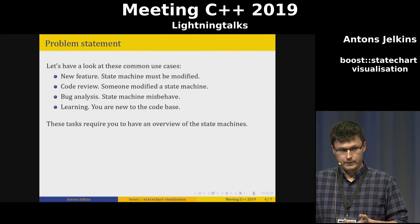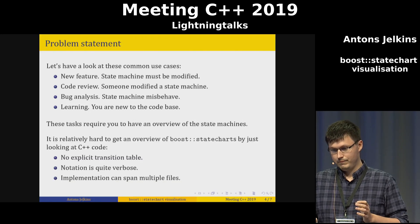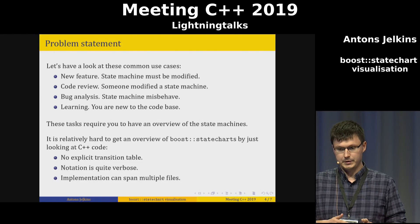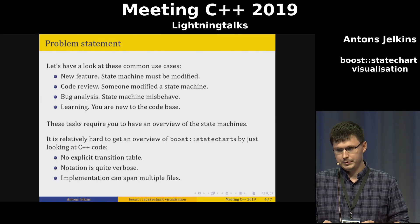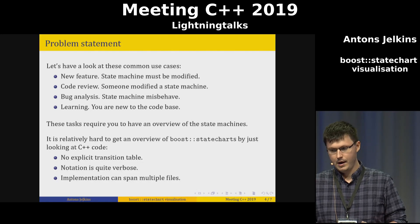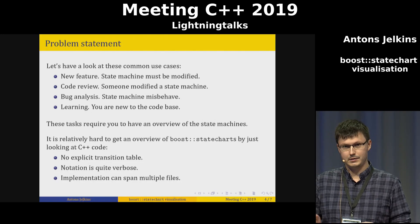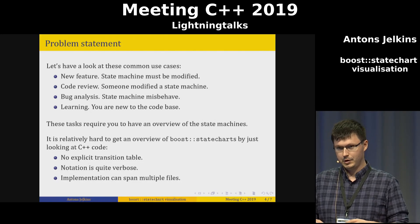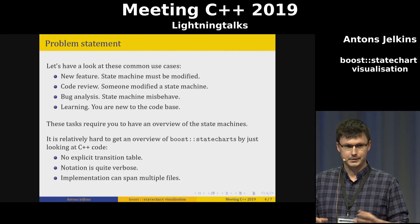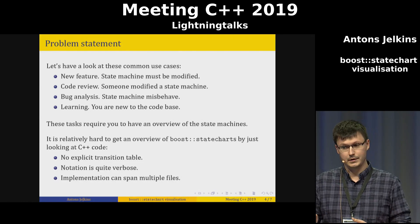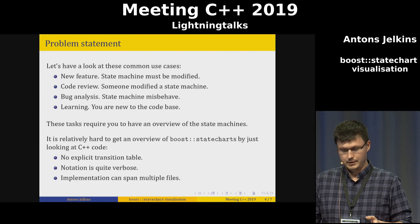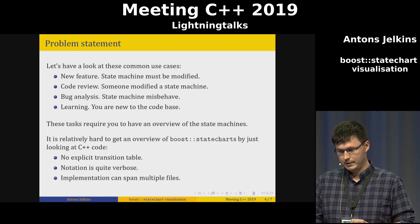So how do you get an overview? With Boost State Charts, you cannot easily look at the C++ code because it's quite hard. There is no transition table like in MSM, the notation is quite verbose, and the implementation can even span multiple files. So you need to open multiple files, see what's happening, and maybe draw the state machine by hand.